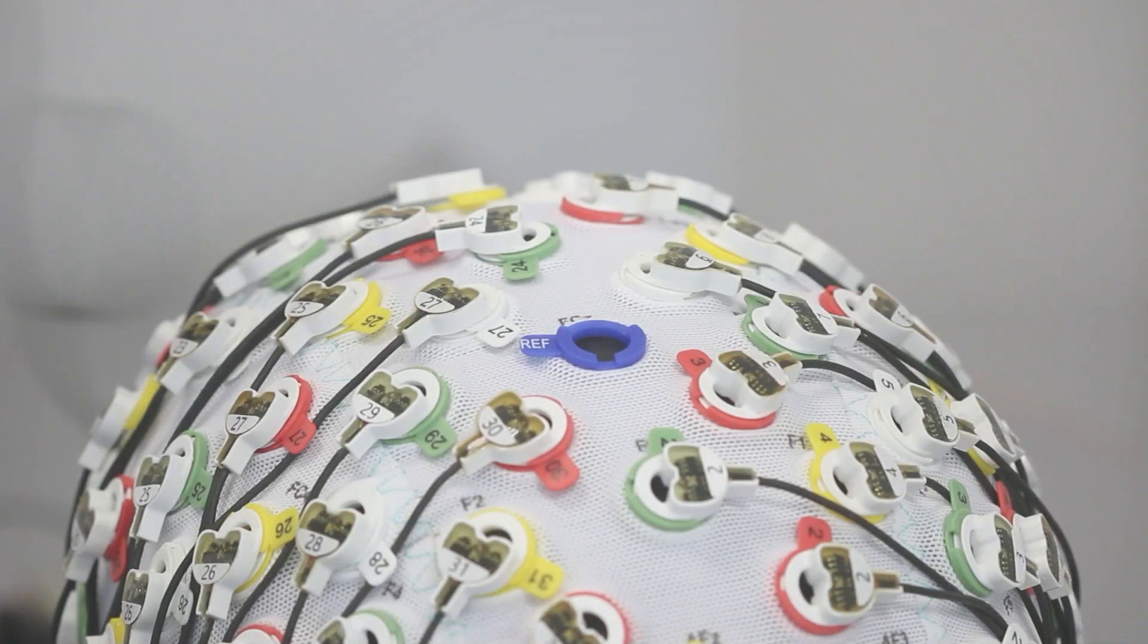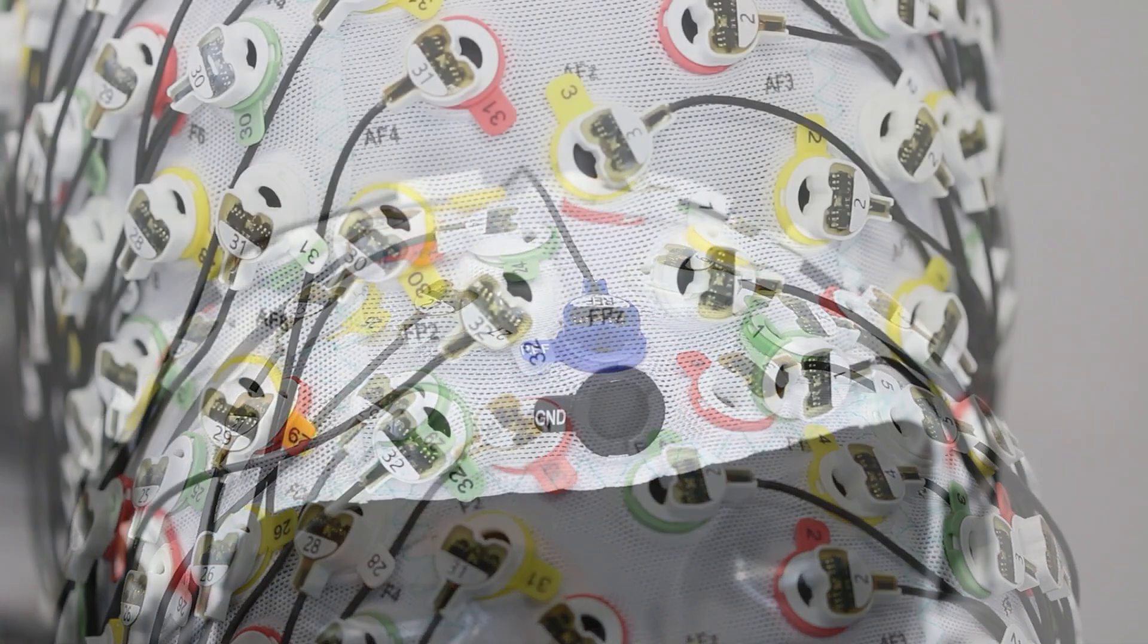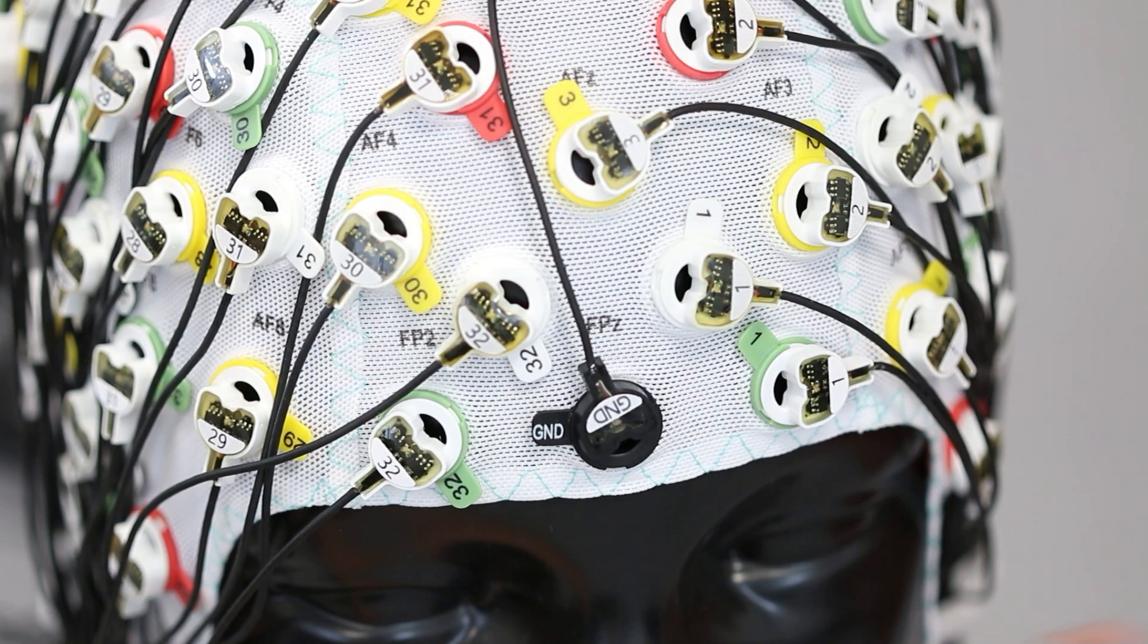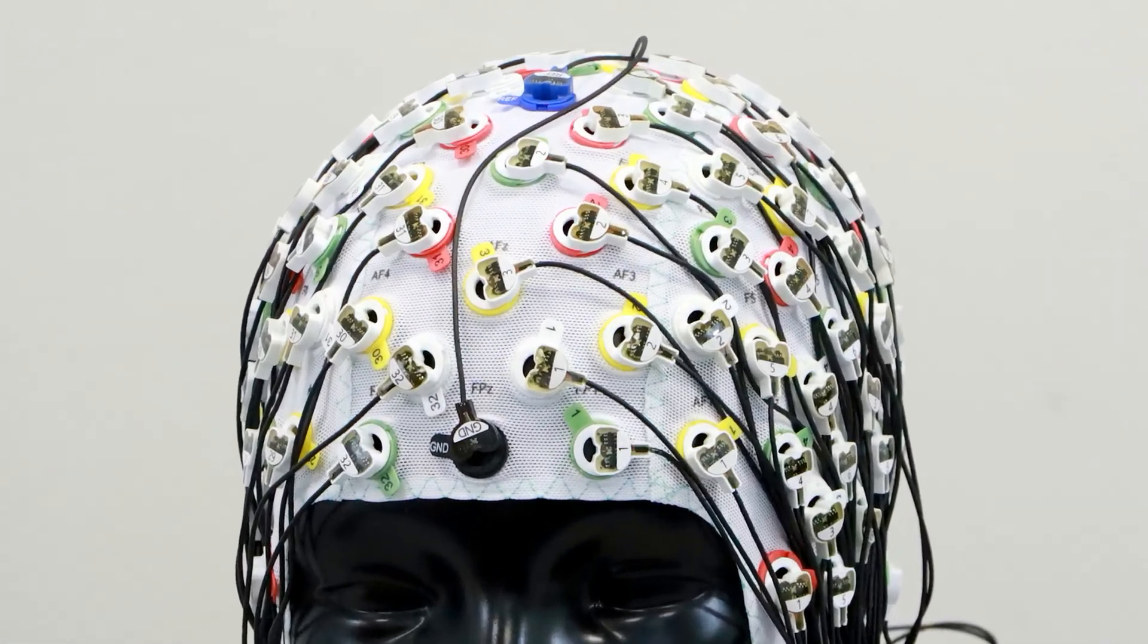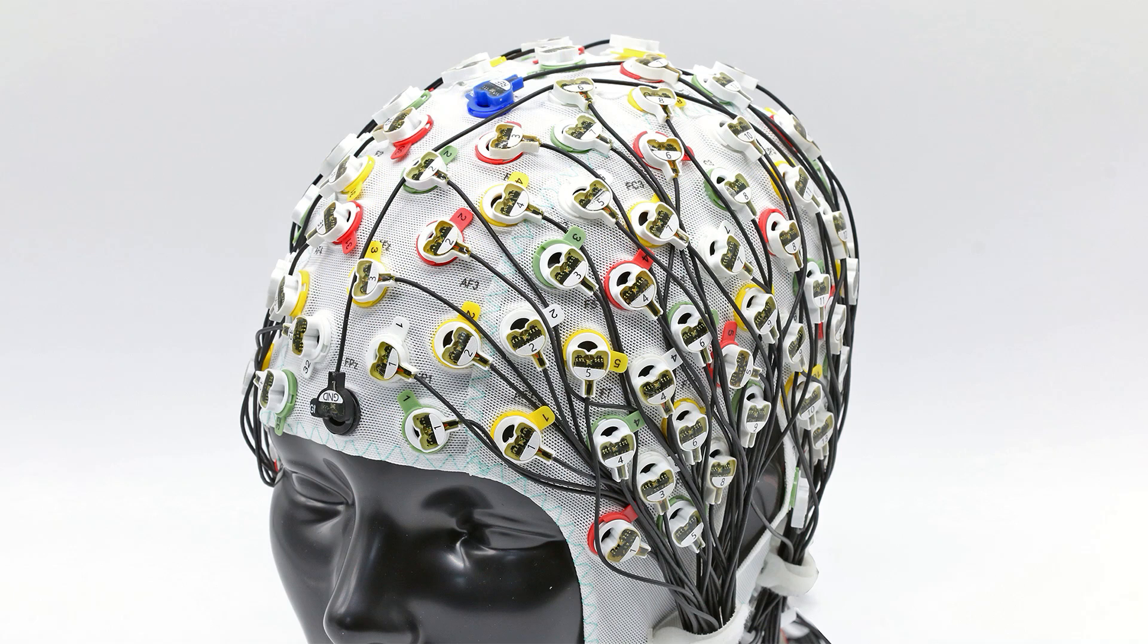Insert the reference REF and ground GND electrodes into the respective blue and black holders last, and let the lead wires route above and behind the head. Follow all the steps till the cap is fully populated.